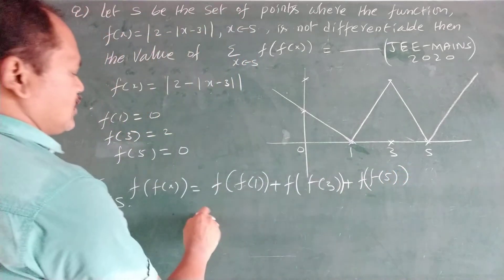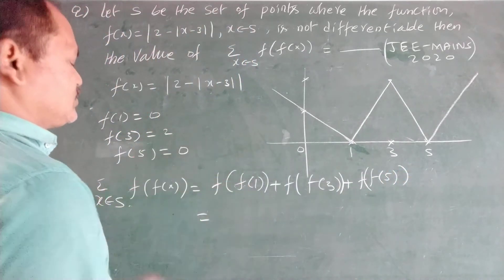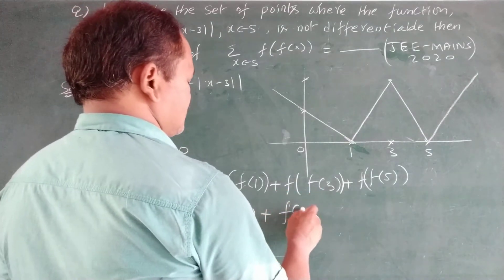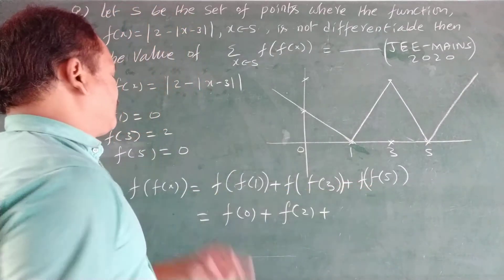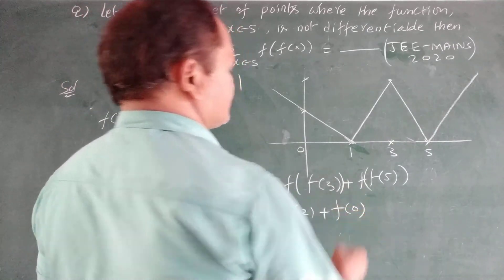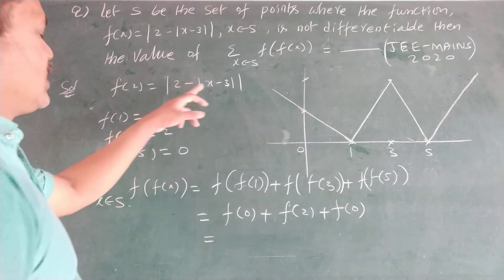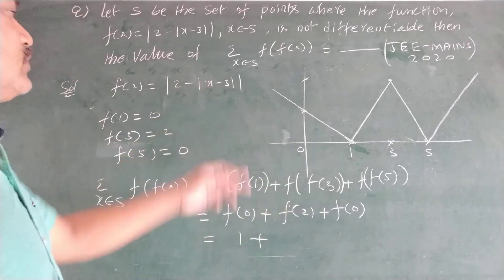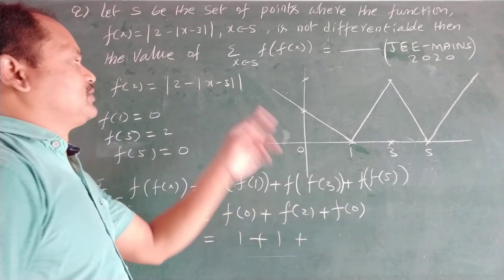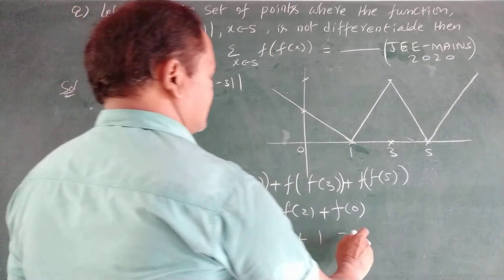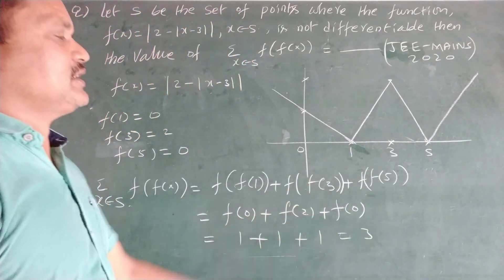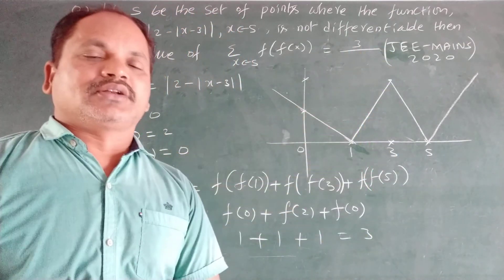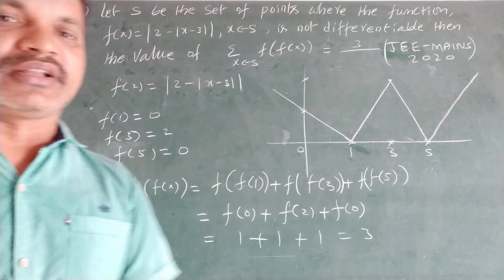Now evaluating: f(0) = 1, f(2) = 1, and f(0) = 1. Therefore the sum is 1 + 1 + 1 = 3. The function is not differentiable at 3 points, and the final answer is 3.